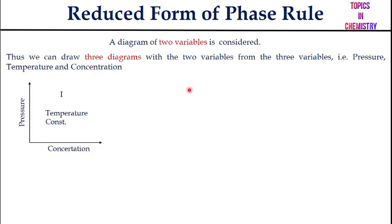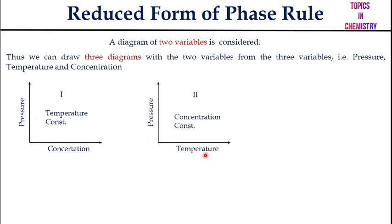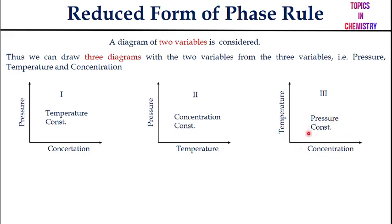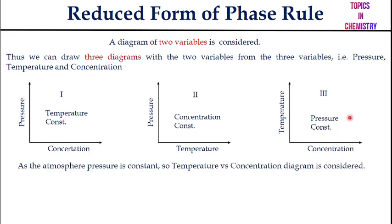From the three variables, you can draw three two-dimensional diagrams: a pressure versus concentration diagram (temperature constant), a pressure versus temperature diagram (concentration constant), and a temperature versus concentration diagram (pressure constant). The third diagram — temperature versus concentration — is the most practically useful, because atmospheric pressure is constant at one atmosphere.